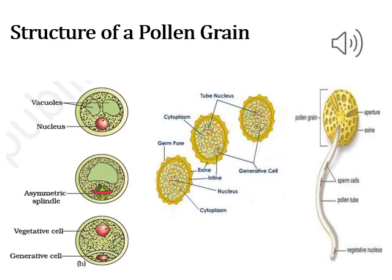In this picture, you can see the vegetative cells and the generative cells within the pollen grains. In the last picture, the male gametes have undergone division to form two sperm cells, which are transferred through the pollen tube during pollination.